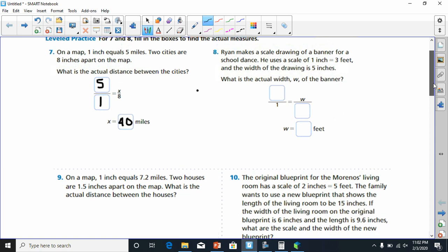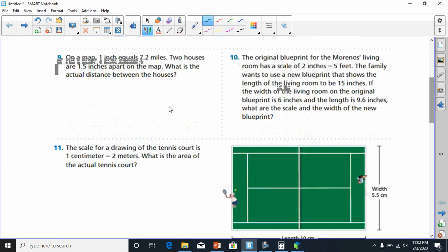Going on to number 9. On a map, 1 inch again equals 7.2 miles. Two houses are 1.5 inches apart.